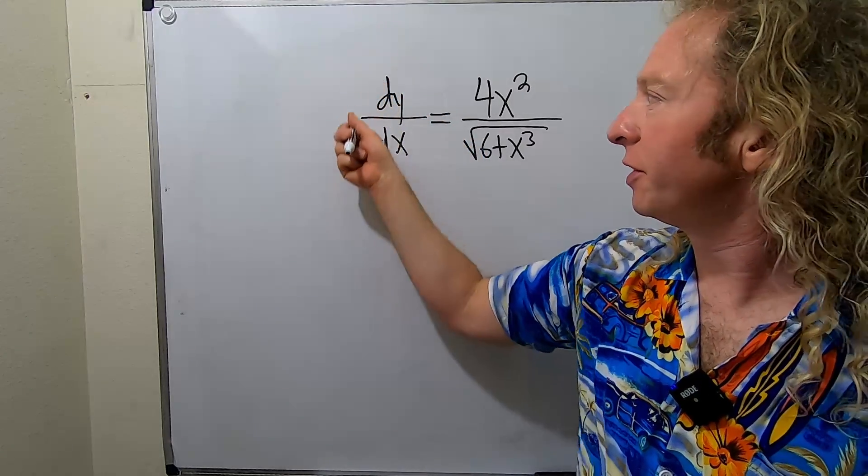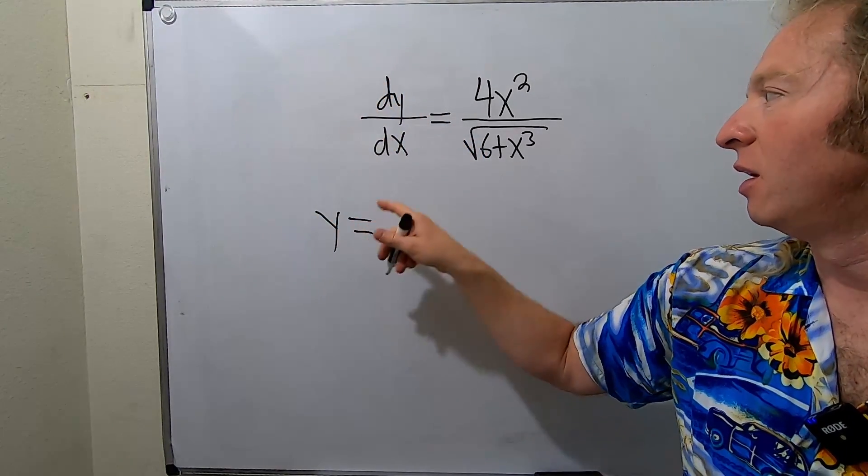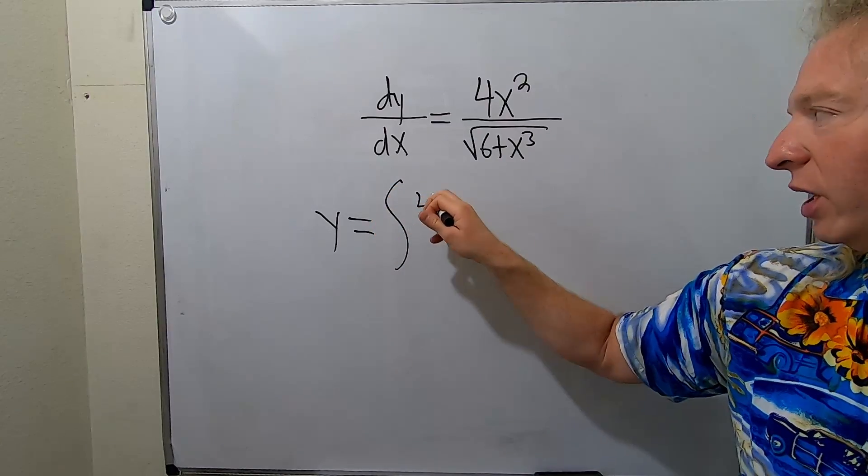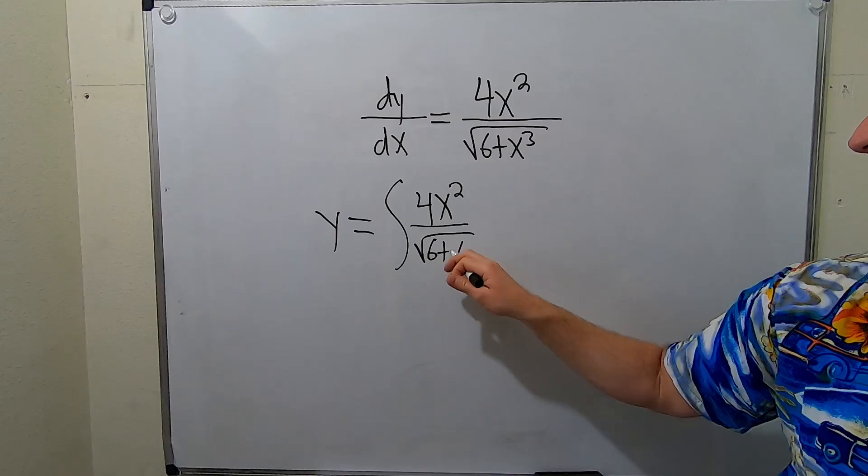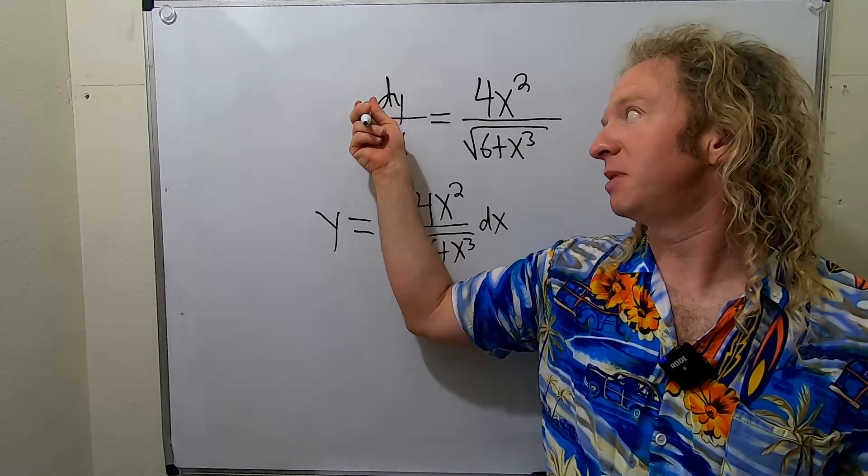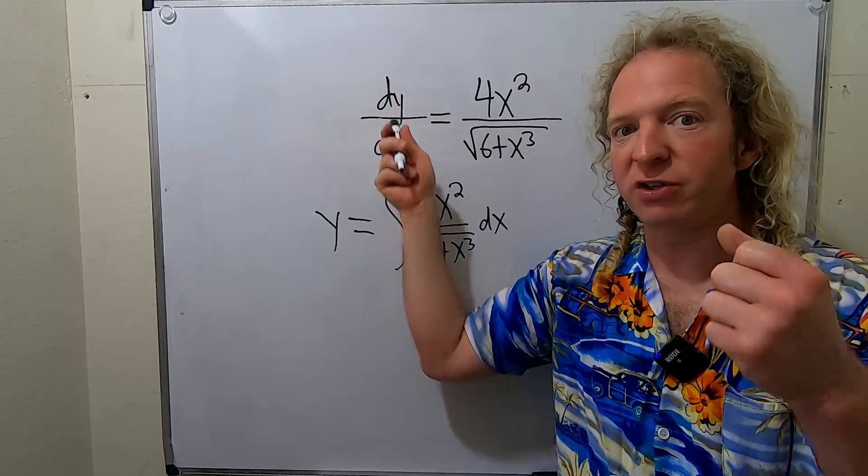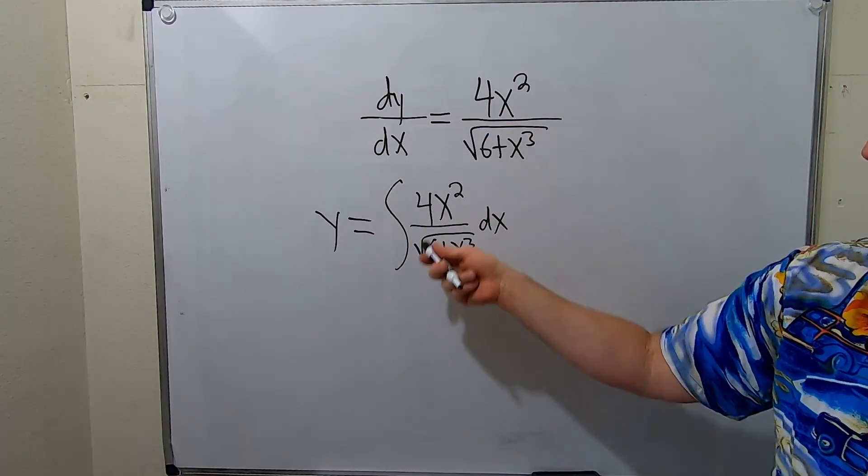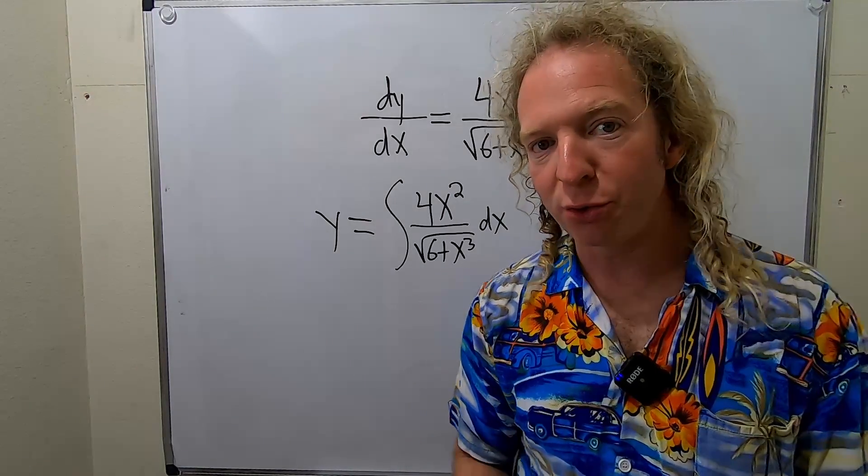If you integrate the derivative, you just get y. So integrating this, we just get y. And then we have to integrate this. So it's really just an integration problem. All we really have to do to find the answer here is to find y. We integrate this piece and we get this because the integral of a derivative is the original function. And then we have to integrate this piece. This piece requires a u substitution.